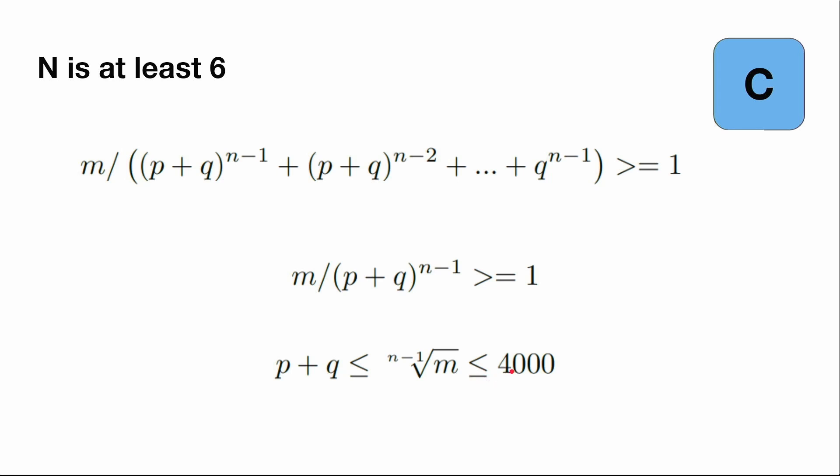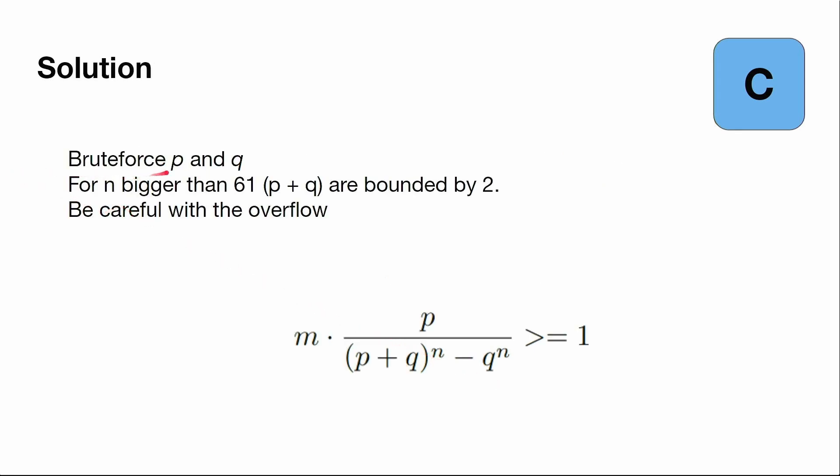The solution should be: we will brute force p and q. For n bigger than 61, p plus q is bounded by 2, which is relatively small. We have to be careful with the overflow. So we can substitute p and q, which we brute force, to this formula and check that it's integer.